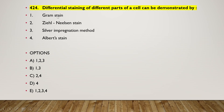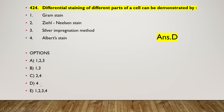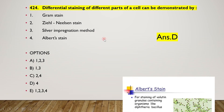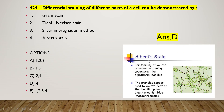Next question: differential staining of different parts of a cell can be demonstrated by — (1) Gram stain, (2) Giemsa stain, (3) silver impregnation method, (4) Albert stain. The right answer is option D — Albert stain is the right answer.